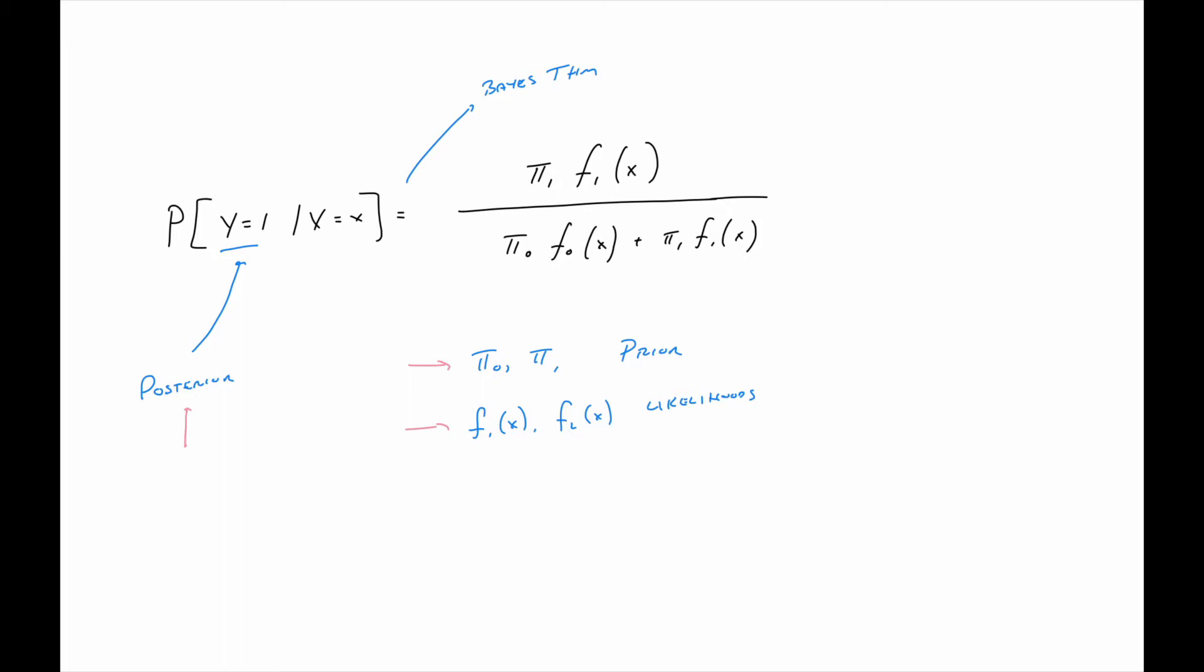But so if we're keeping track, we need to estimate a bunch of things. So we need to estimate pi zero and pi one. That's sort of obvious. And how to do that is pretty simple. Just look at the proportion of zeros for pi zero. Look at the proportion of ones for pi one. Or you as a practitioner could just say, here's my prior belief, and specify those two things.